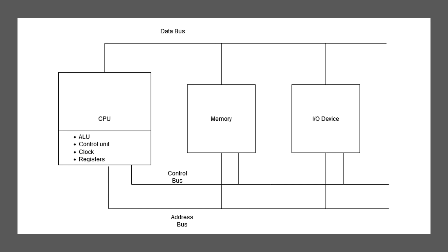The CPU has a lot of different components: it's got an ALU, which is an arithmetic logic unit, a control unit, a clock, and registers. What I want to focus on here is generally the ways the CPU communicates with memory and IO devices. There are three main things called buses handling the communication: the control bus, the address bus, and the data bus.